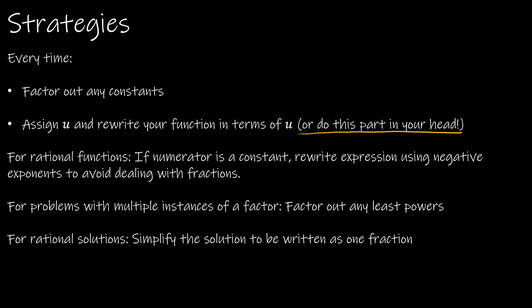If you have a rational function where the numerator is a constant, rewrite the expression using a negative exponent to deal with fractions. For example, 3 over (x minus 2) squared — just take the 3 out and write this as x minus 2 to the negative 2. For problems with multiple instances of a factor, factor out any least powers. For rational solutions, simplify the solution to be written as one fraction.